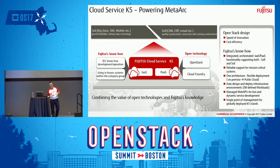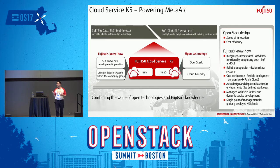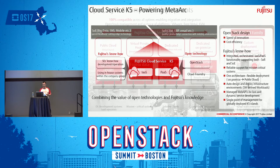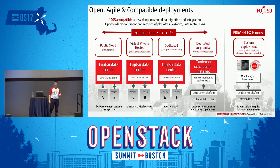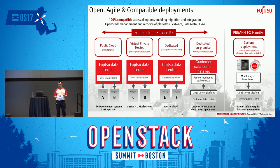Digging deeper into Fujitsu Cloud Service K5: the backend is OpenStack infrastructure as a service. We also have Platform as a Service built in — we've stuck with open source and use Cloud Foundry as our PaaS offering. We also have API management using Apigee. This is a very important differentiator slide: when you want Fujitsu Cloud Service K5, you can have the traditional public cloud model on the left — virtual shared. You can also have a dedicated hypervisor, which we call Type 2, if you're concerned about noisy neighbors and want to guarantee compute performance.